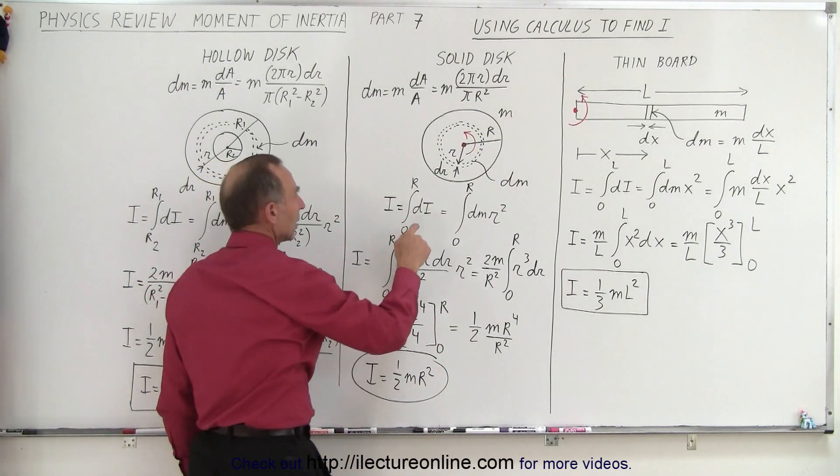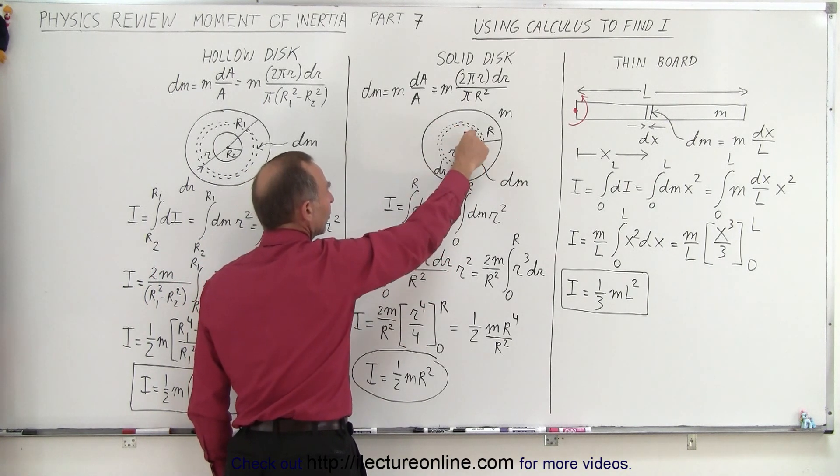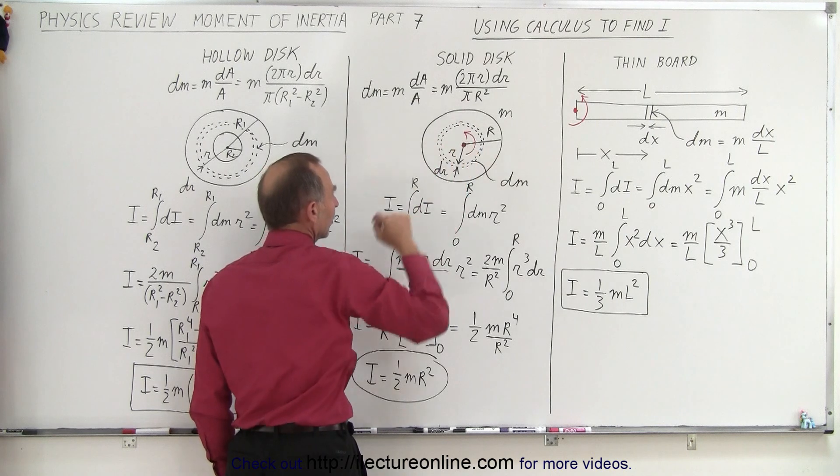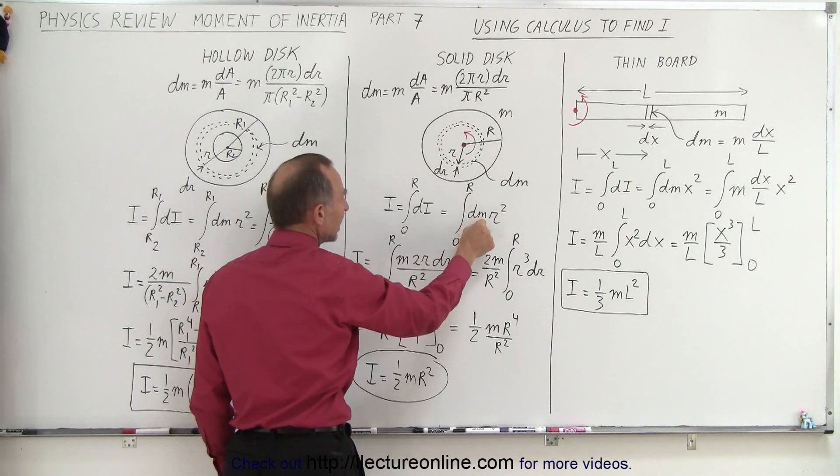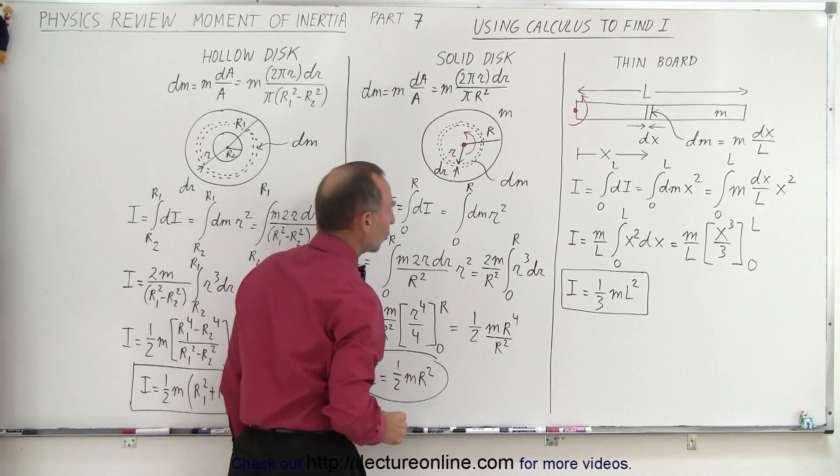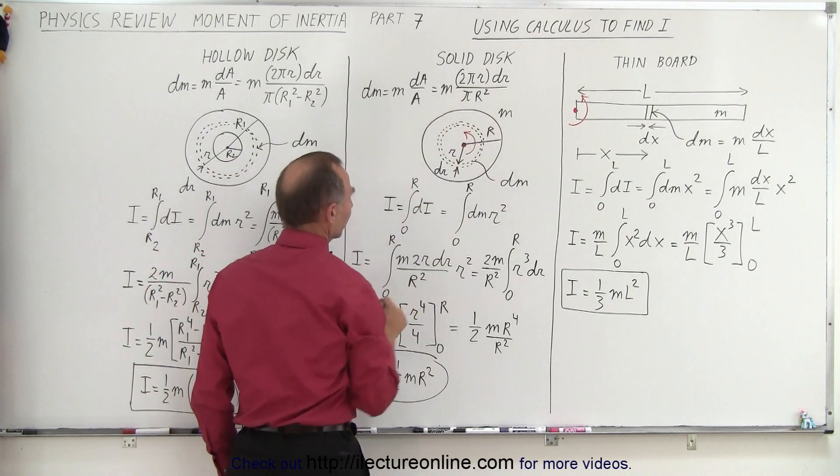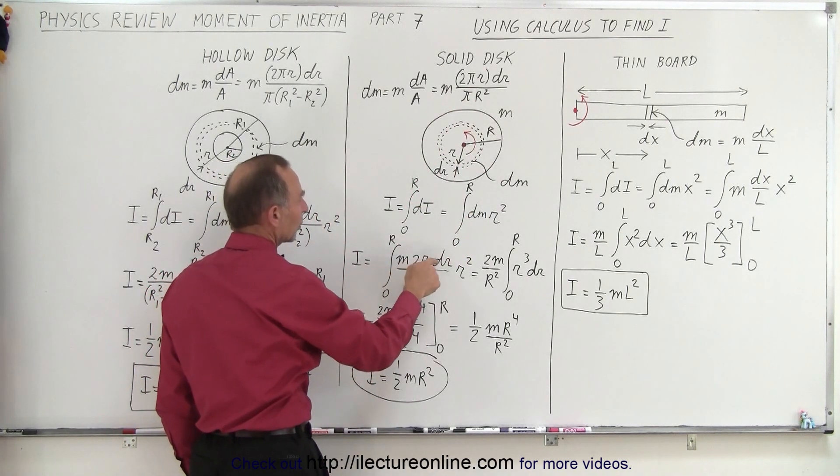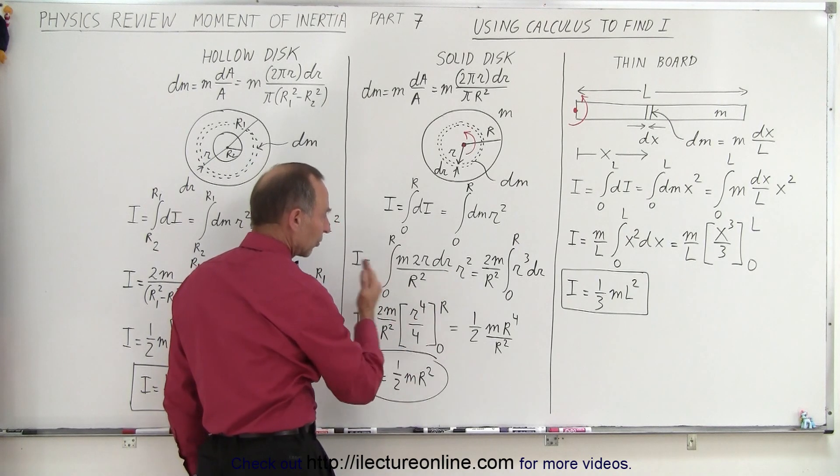So the little segment has a moment of inertia. Now notice all the mass will be at the same distance little r away from the center of rotation. So moment of inertia for that little segment is dm, the mass of that segment, times the distance from the center mass squared, which is r squared. dm can then be replaced by what we have over there. So we end up with m 2 r dr over r squared times little r squared.